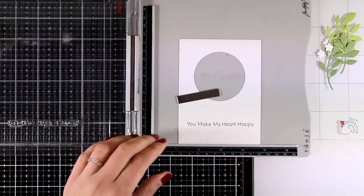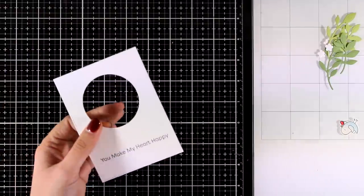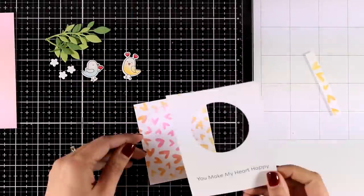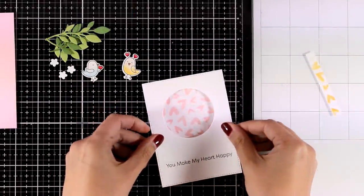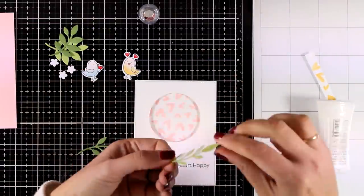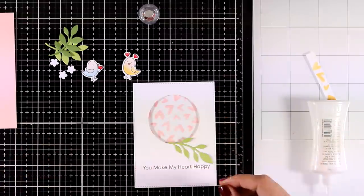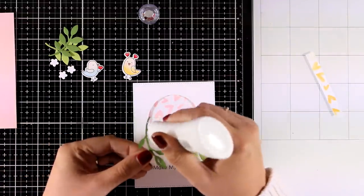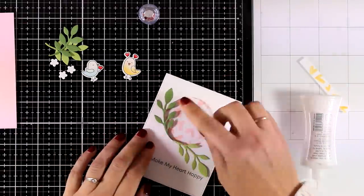I also prepared this panel with a circle window at the center as well as a sentiment from the same stamp set that says You Make My Heart Happy. Now at the back I am going to stick this panel that I created in the beginning with a stencil and this would make a great shaker card. However, I am just going for a simple window card again.